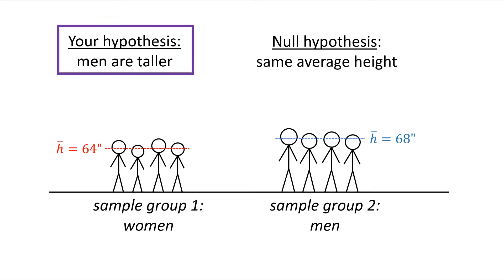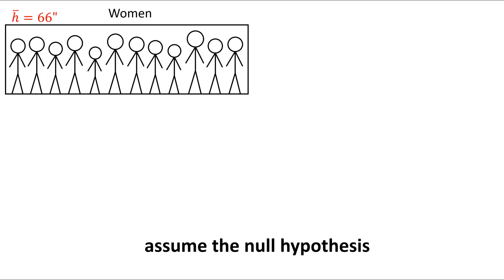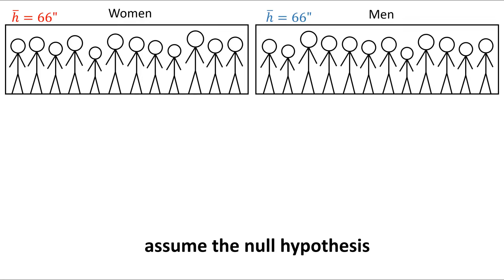This seems to support your hypothesis, right? Well, maybe not. Pretend for a moment the null hypothesis is actually true. That means if we measure all of the women in the world and we measure all of the men in the world, they would have the same average height.